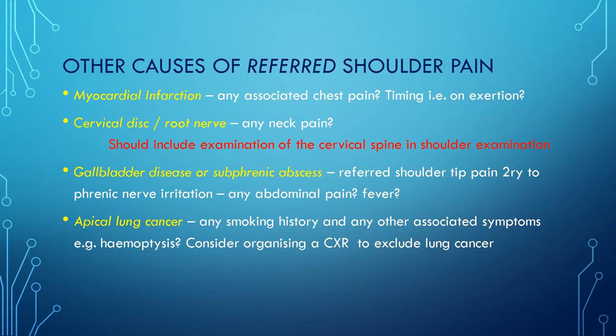One of the golden rules of any joint examination is to examine the joint above and the joint below, particularly because of referred pain. Don't forget also that irritation of the phrenic nerve can cause shoulder tip pain, so gallbladder disease or subphrenic abscesses can present as shoulder tip pain — it's worth asking about abdominal pain or fever if suspected.